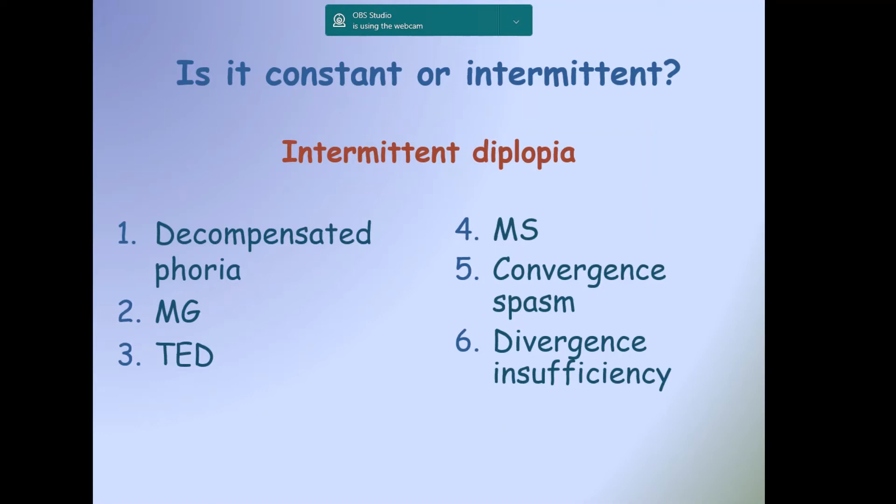The next question is: Is it constant or intermittent? You should know that by the history. If by history you know it is intermittent diplopia, then you should put in mind decompensated phoria, myasthenia gravis, thyroid eye disease, multiple sclerosis, convergence spasm, and divergence insufficiency.